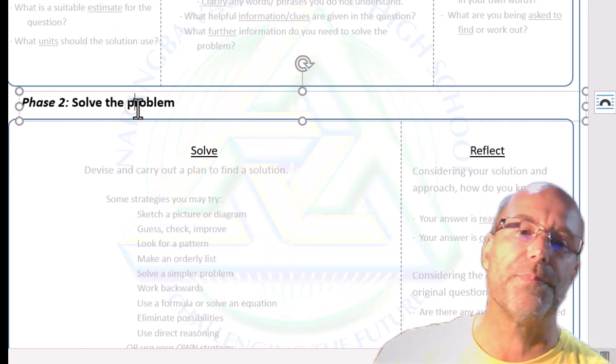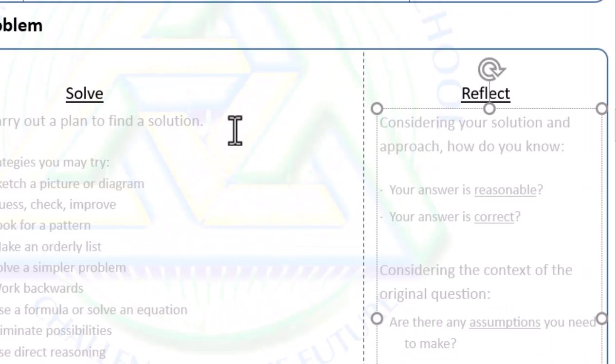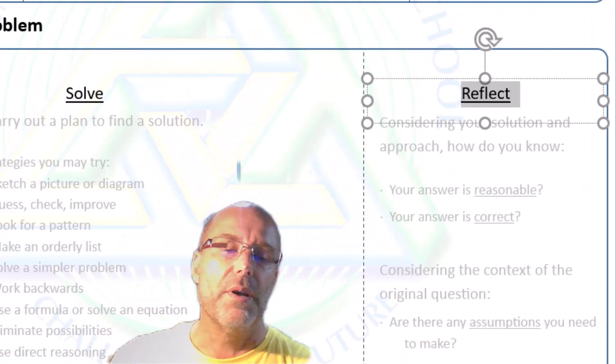After you've come up with an answer and you've made the problem, made an answer there, you reflect. Does it seem right? Is the answer reasonable? Is it within acceptable parameters? Does it seem correct? Can we use technology to check it if we didn't use technology already? So let's have a look at a quick example.